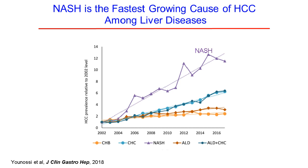NASH is also associated with a significant risk of hepatocellular carcinoma. As shown in a recent review by Zobirian Ossi, NASH is the fastest-growing cause of hepatocellular carcinoma among liver diseases. In absolute numbers, it's nowhere near as common a cause as viral hepatitis, but in terms of the rate of rise over recent years, NASH is rising much faster than other etiologies.